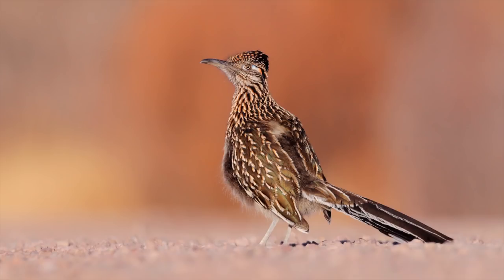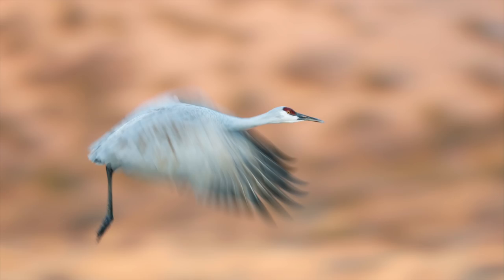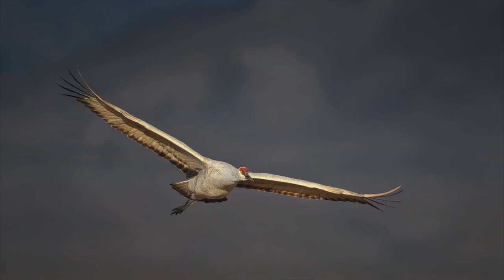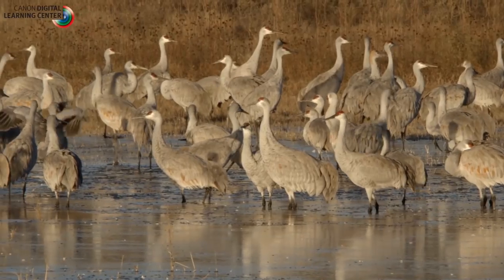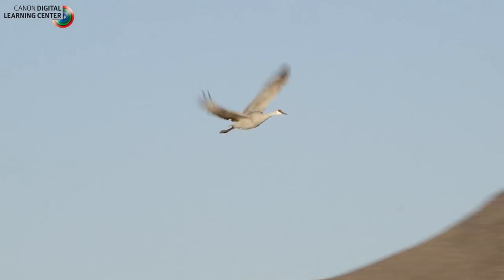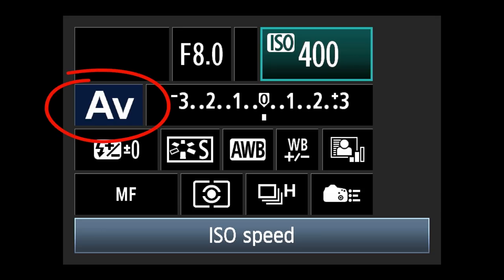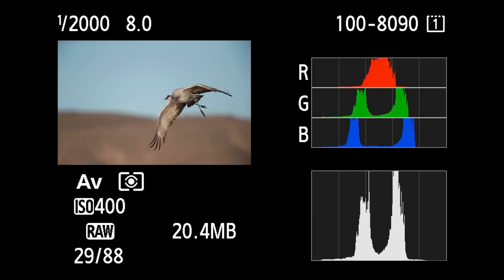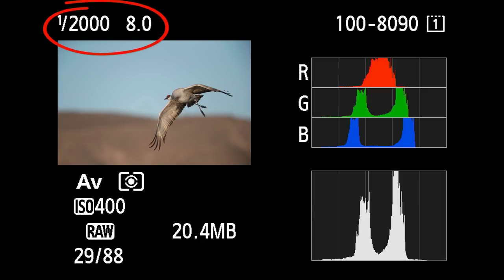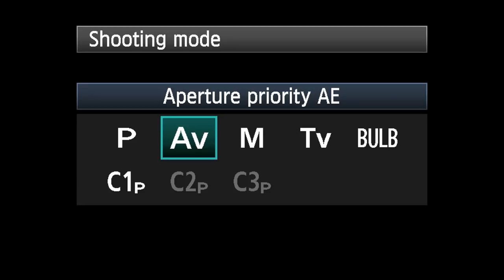In situations where the subject might be small or large in the frame and the background might be light or dark in tonality, it's imperative to learn to work in manual mode. When you have potentially changing backgrounds — a crane flying against a light blue sky, then against green mountains, then against darker blue water — it's a real challenge to set the correct compensation. How much easier to start in Aperture Value (AV) mode, make an exposure, evaluate the histogram, confirm data in the fifth box, and note that the exposure is 1/2000th at f/8.